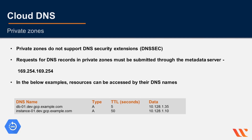Private zones don't support DNS security extensions (DNSSEC). Requests for DNS records in private zones must be submitted to the metadata server at 169.254.169.254, which is the default internal name server for VMs created from Google-supplied images. You can submit queries to the name server from any virtual machine that uses an authorized VPC network. For example, instance-01.dev.gcp.example.com is mapped to 10.128.1.10 — these records cannot be seen from the internet.